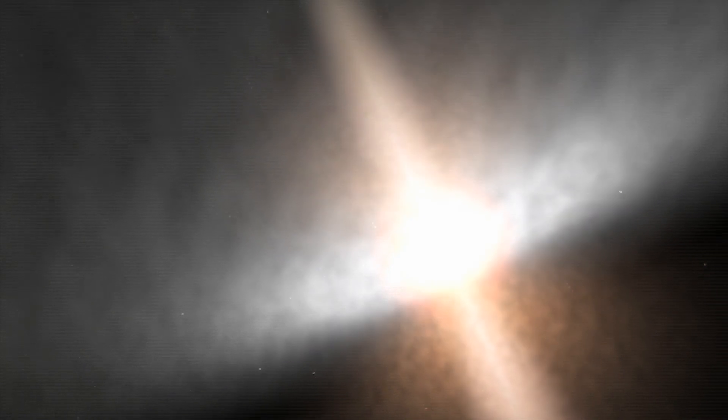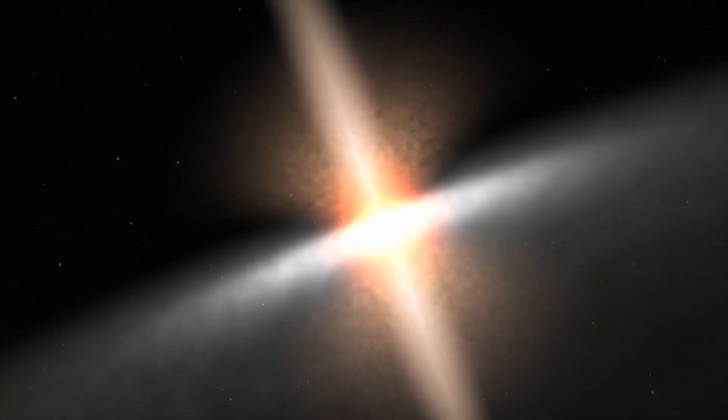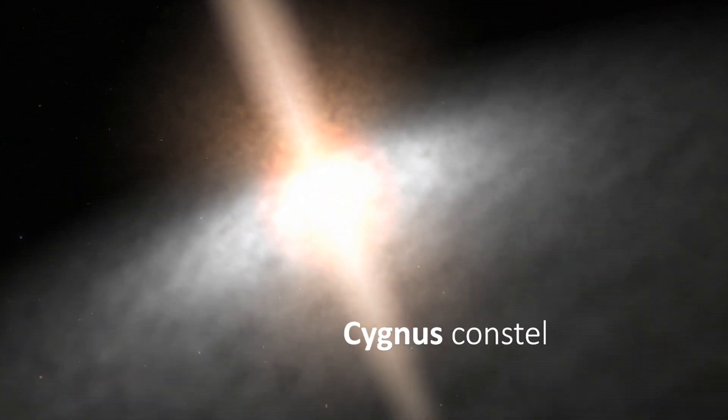Lately, astronomers have detected plasma jets spraying from a rapidly spinning black hole about 8000 light years away in the Cygnus constellation.